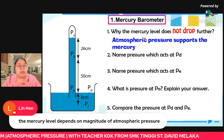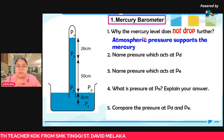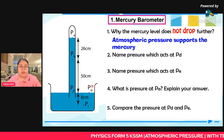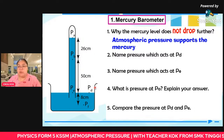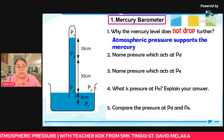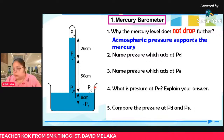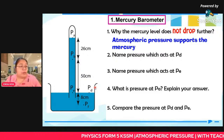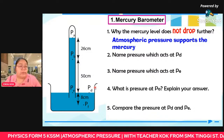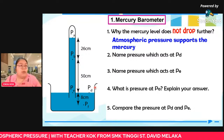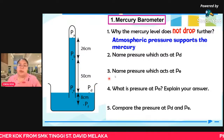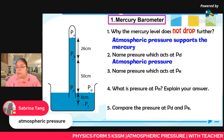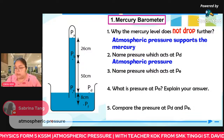Question 2: name the pressure acting at point PD. PD is atmospheric pressure — Sabrina Tang answered correctly. Question 3: name the pressure at point PE. Sharon answered correctly — atmospheric pressure. Now, what liquid is inside the tube? This is a mercury barometer, so we're using mercury, not water. The pressure at PE is mercury pressure — you must mention the liquid inside the tube is mercury.